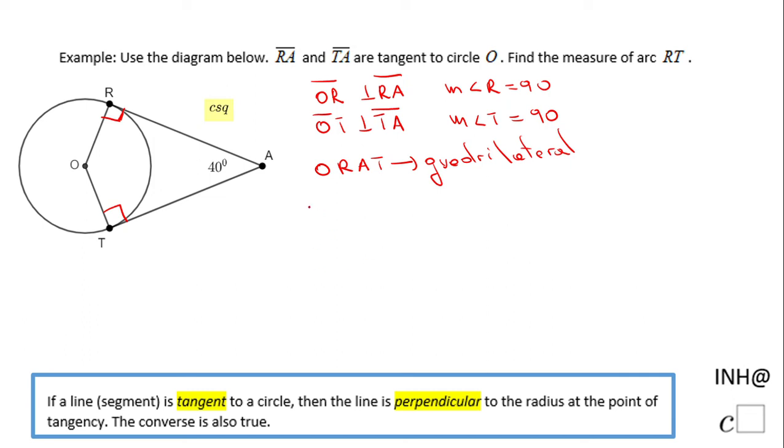So we're going to have the measure of angle O plus the measure of angle R plus the measure of angle A plus the measure of angle T equals 360 degrees.